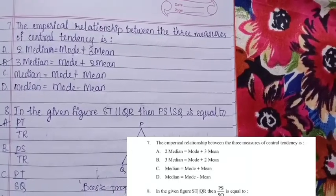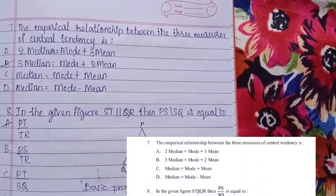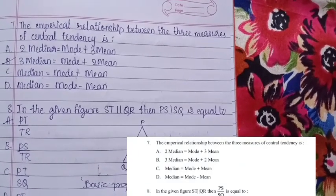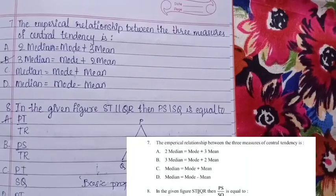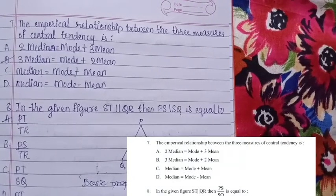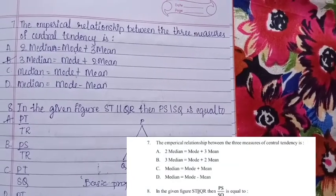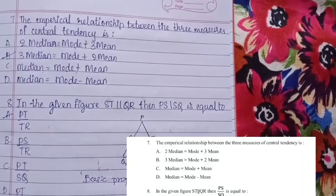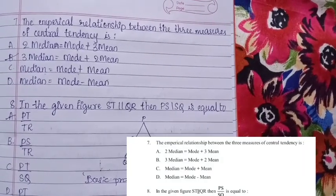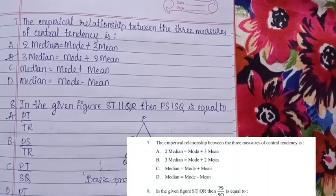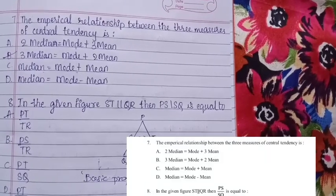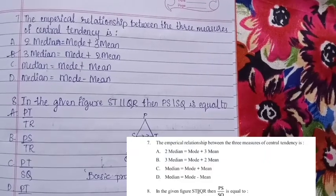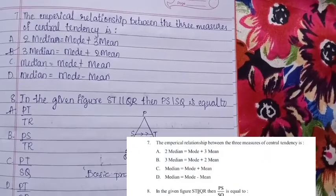The empirical relationship between the three measures of central tendency is: 3 Median = Mode + 2 Mean. Options include 2 Median = Mode + 3 Mean, Median = Mode + Mean, and others, but the correct empirical relationship is 3 Median = Mode + 2 Mean.